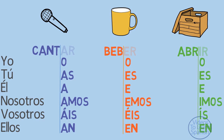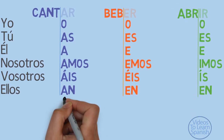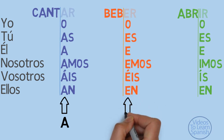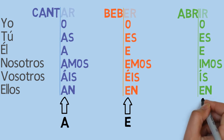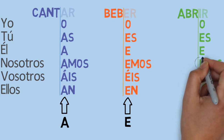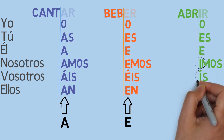Notice that, except for the first person of the singular — yo — all endings of the first conjugation share the vowel E, and all endings of the second conjugation share the vowel E. As for the third conjugation, the only difference with the second is the persons nosotros and vosotros, when instead of E, we have I.